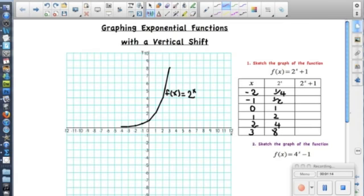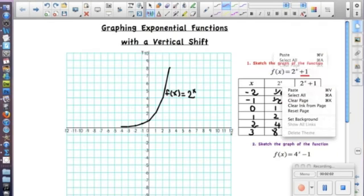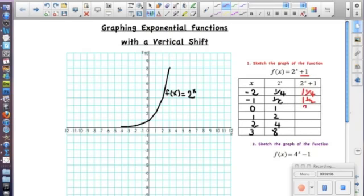So now we're going to add 1. We're going to add 1 to all of these values so that we can get the graph of f of x equals 2 to the x plus 1. So if we plug x as negative 2 into that equation, we should get 1 and a quarter. If we plug negative 1 into that equation, we should get 1 and a half. If we plug 0 into that equation, we should get 2 and so on and so forth. So let's get all the values into our chart. We should get 3, 5, and 9.